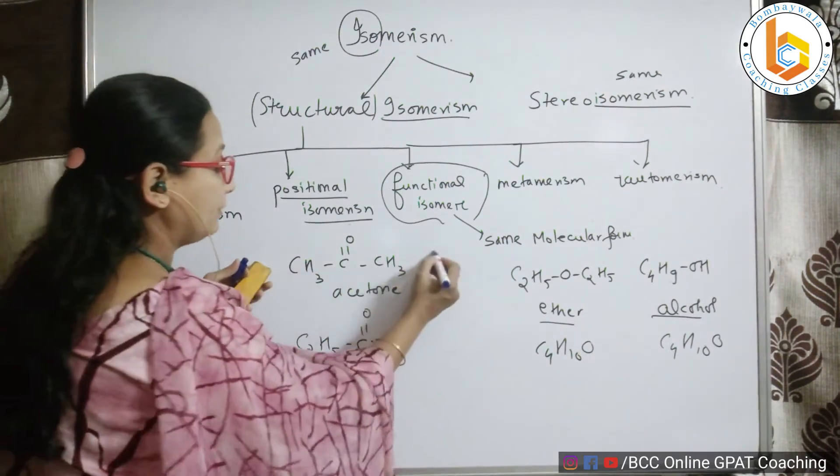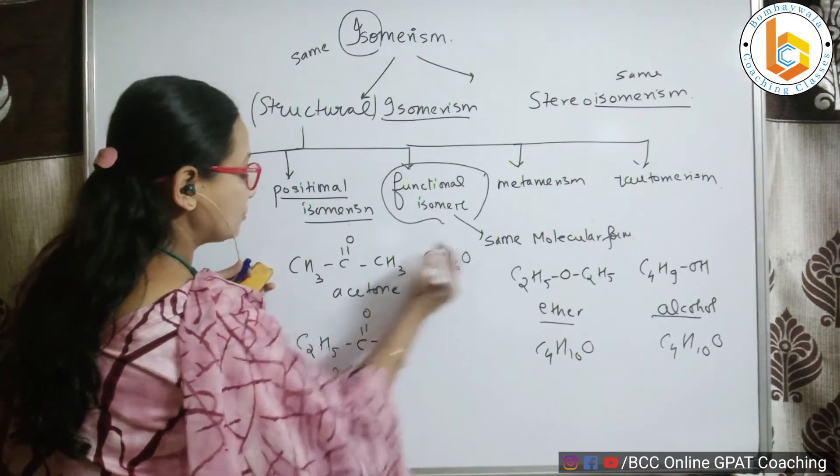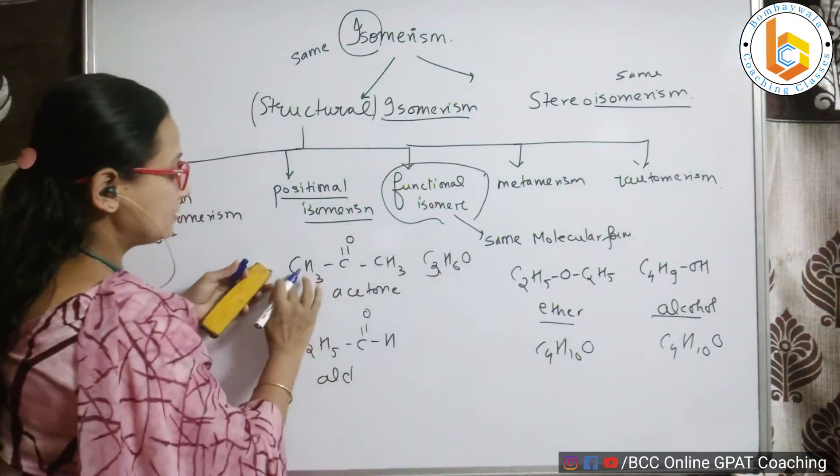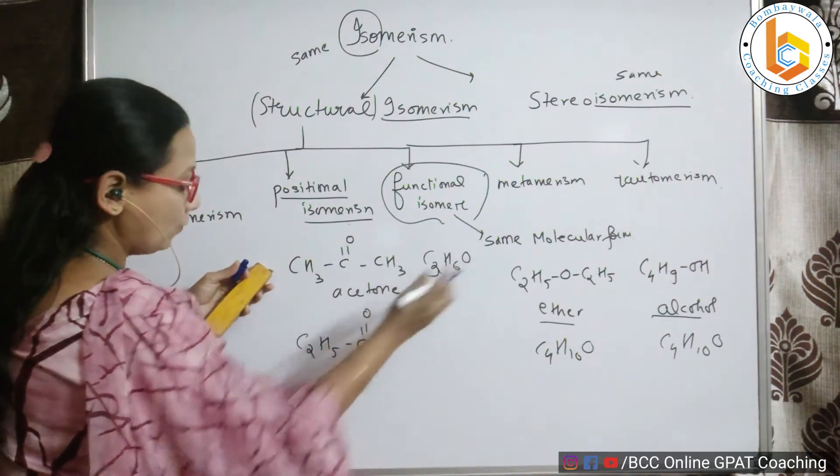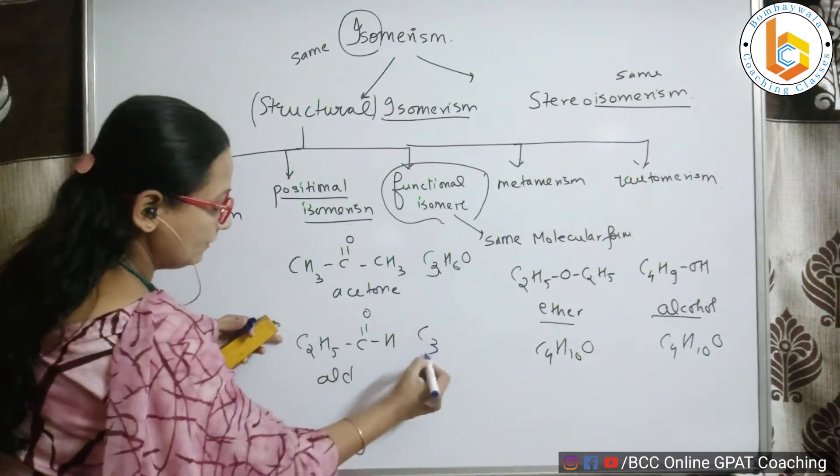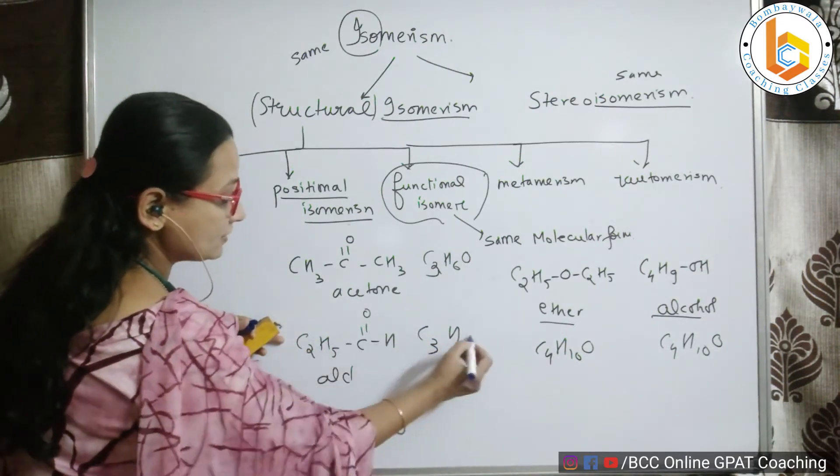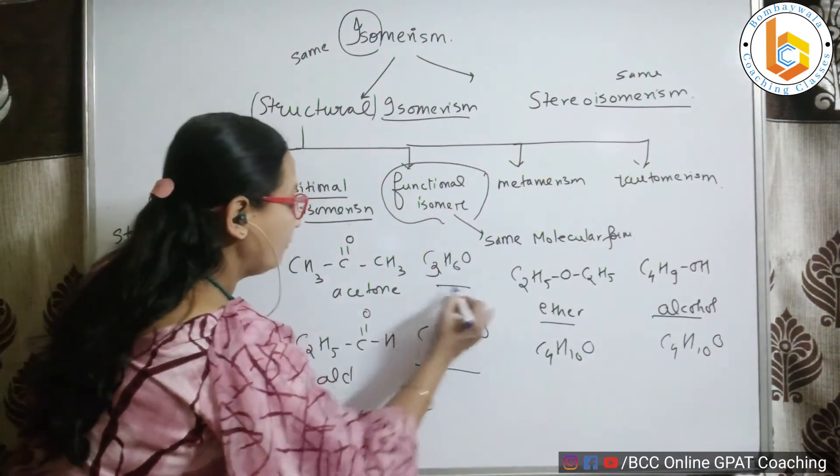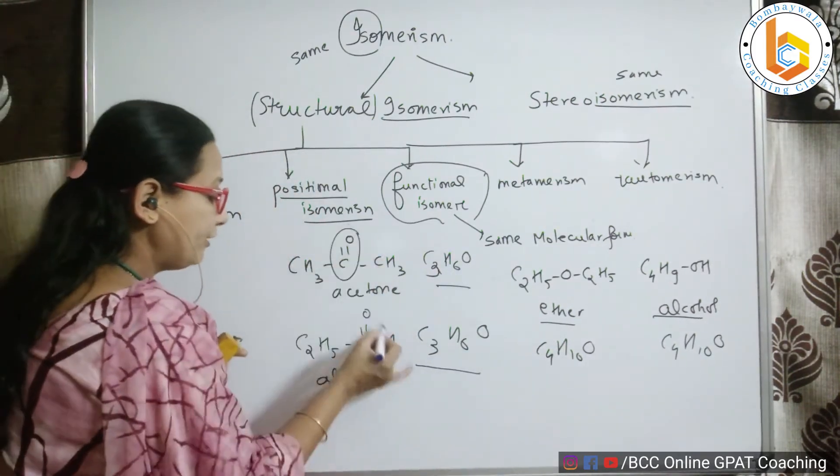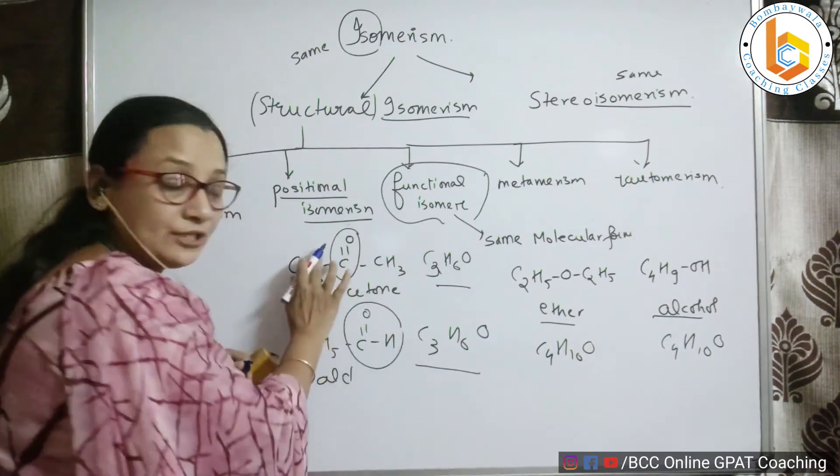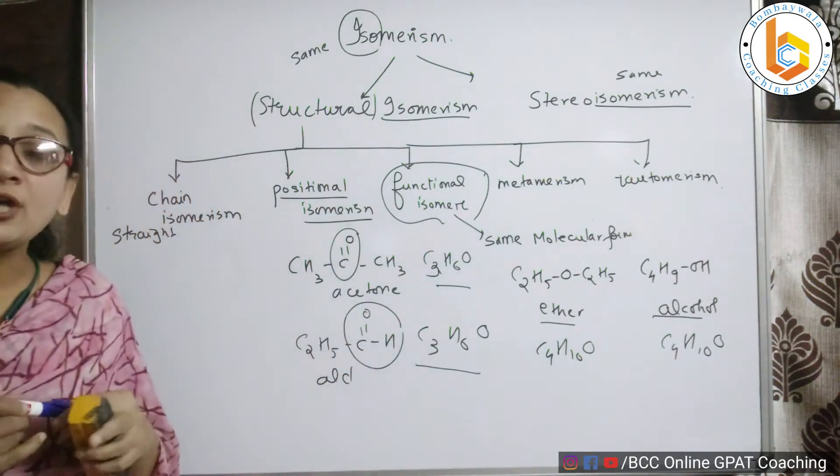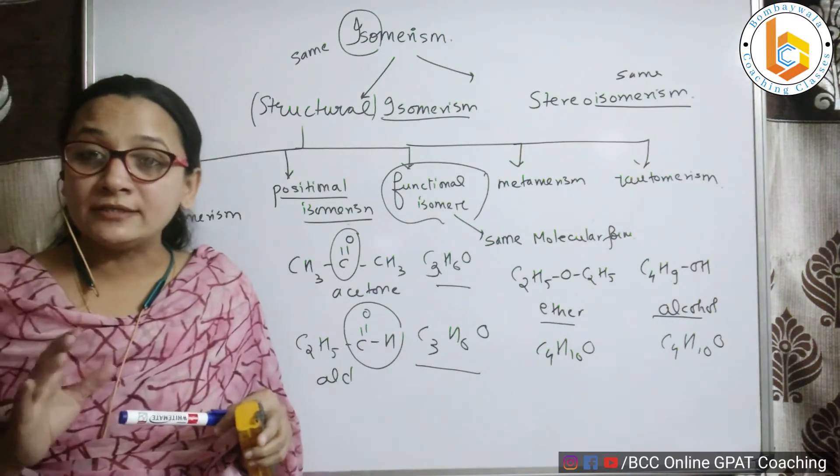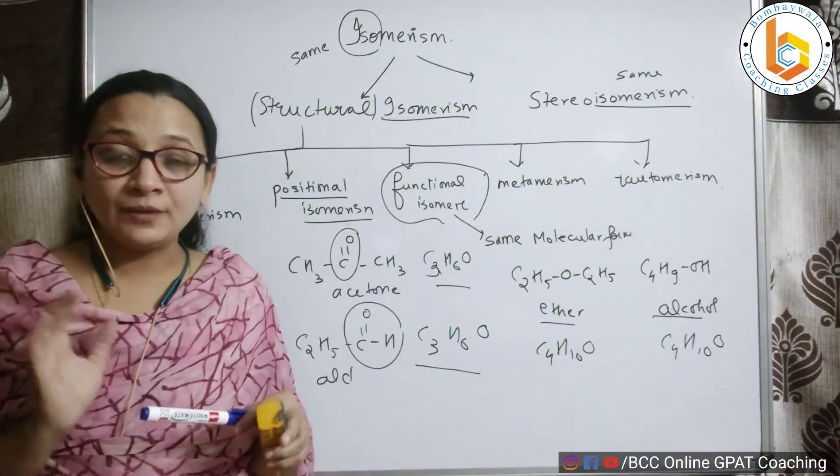This is ketone, this is aldehyde. If I look at the molecular formula, these isomers, this is nothing but C2H6O, C3H6O. And look at this: C3, H5 plus 1, 6 and O. So both of them have the same molecular formula but they have different functional groups. One has ketone, one has aldehyde, so such isomers are referred to as functional isomers.